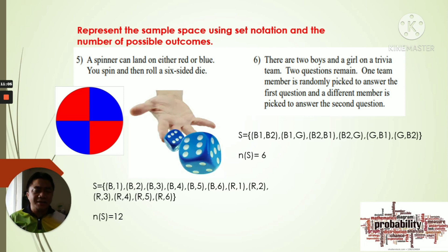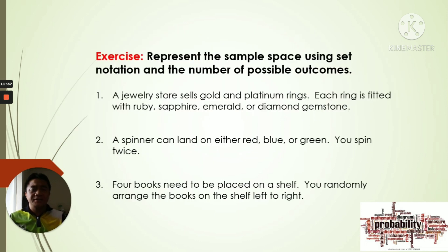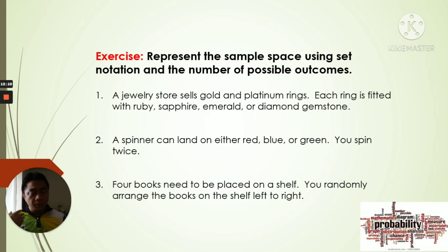I hope you understand this lesson about writing the sample space from word problems on probability. Many of you may find it hard to identify what is being asked and how to write the sample space, but try to understand the word problem — it is easier than it looks. Now we have exercises. Number one: a jewelry store sells gold and platinum rings; each ring is fitted with a ruby, sapphire, emerald, or diamond gemstone. There are two events — the ring type and the gemstone — so pair them.